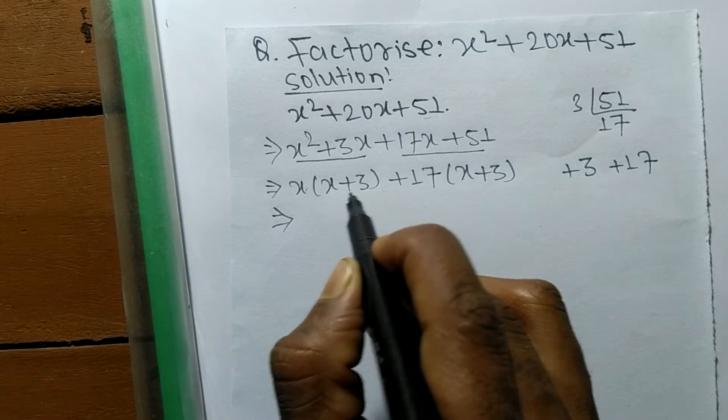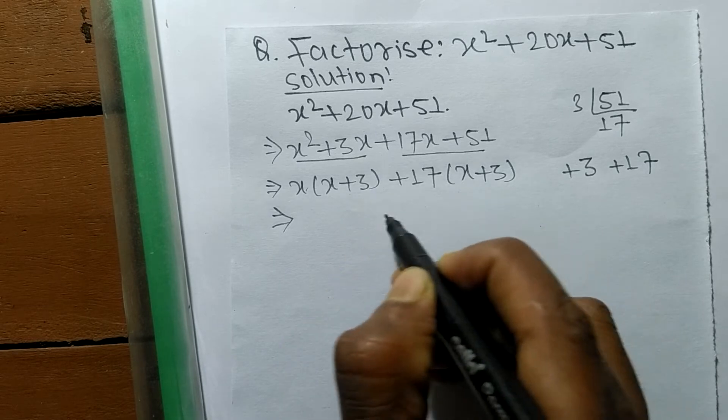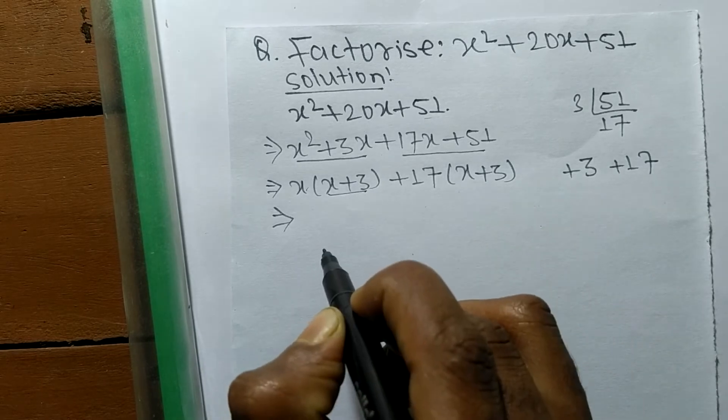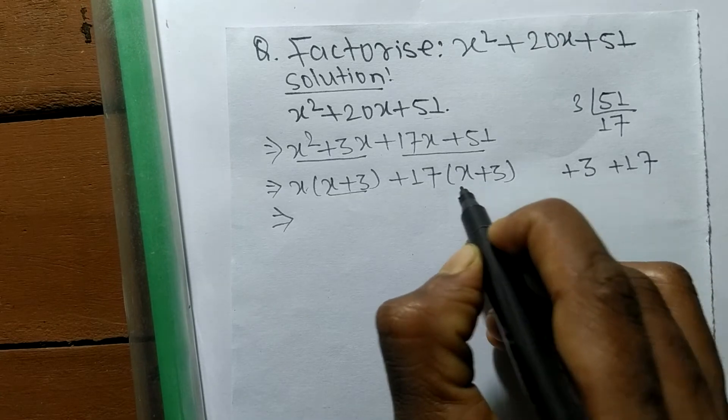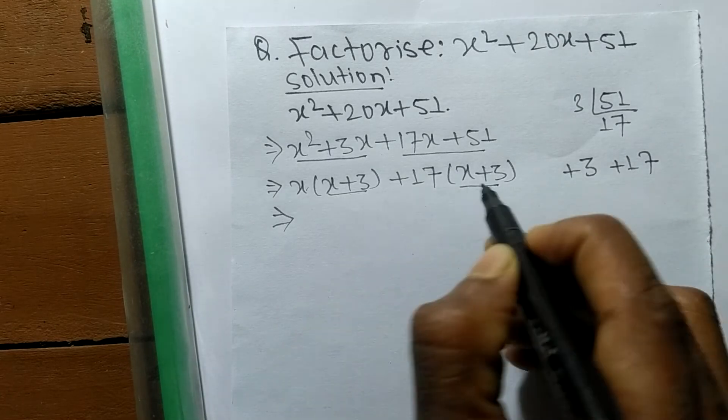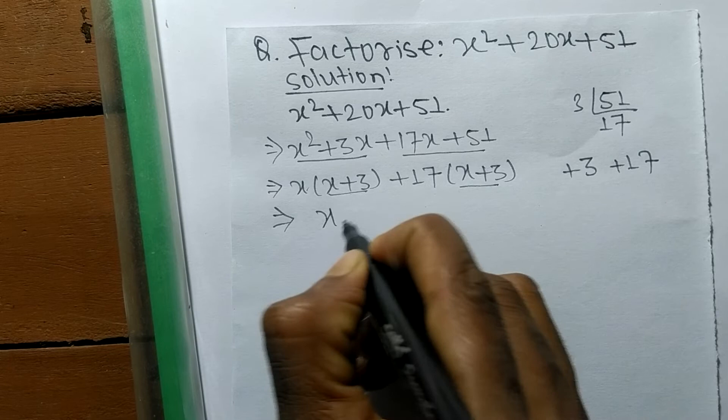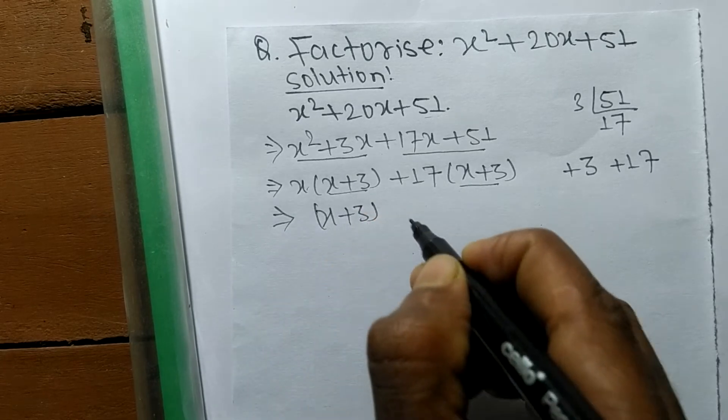Now we find the common in both pairs. In the first there is x + 3 and in the second there is x + 3. So in both pairs the common is x + 3.